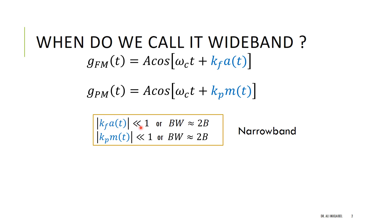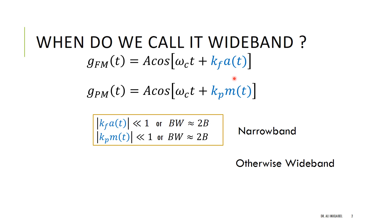If the deviation is much smaller than one, we call it narrowband and the bandwidth will be almost double the message bandwidth, 2B_m. Similarly for phase modulated signals, if the deviation term is small, the bandwidth will be 2B_m and we call it narrowband. We call it wideband when this condition does not hold — when the deviation cannot be ignored or is not relatively small.